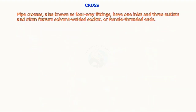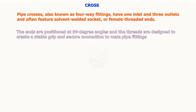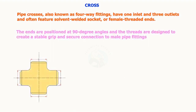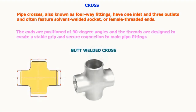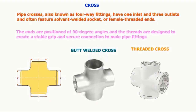Pipe crosses, also known as four-way fittings, have one inlet and three outlets and often feature solvent welded socket or female threaded ends. The ends are positioned at 90-degree angles and the threads are designed to create a stable grip and secure connection to the male pipe fittings.